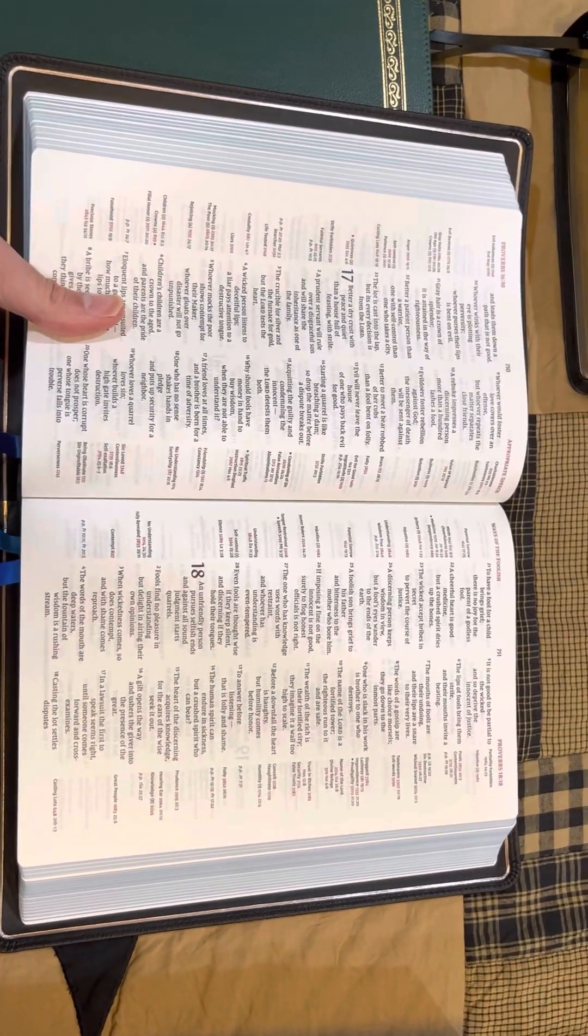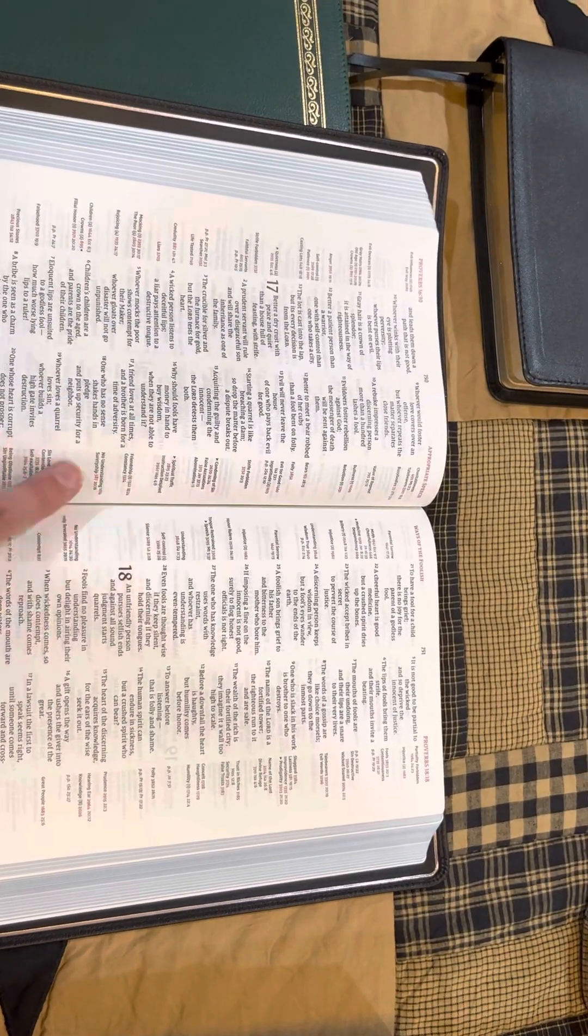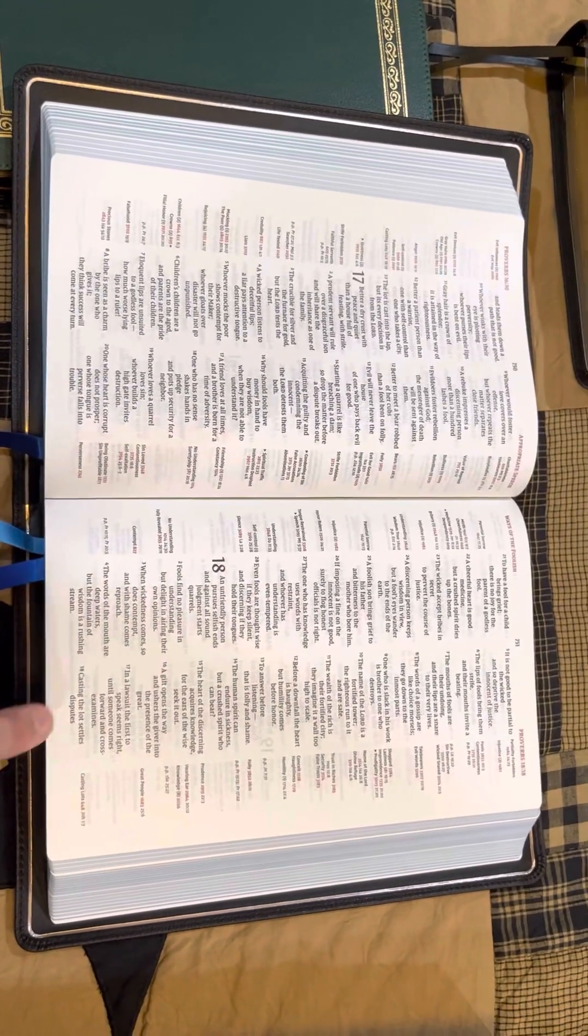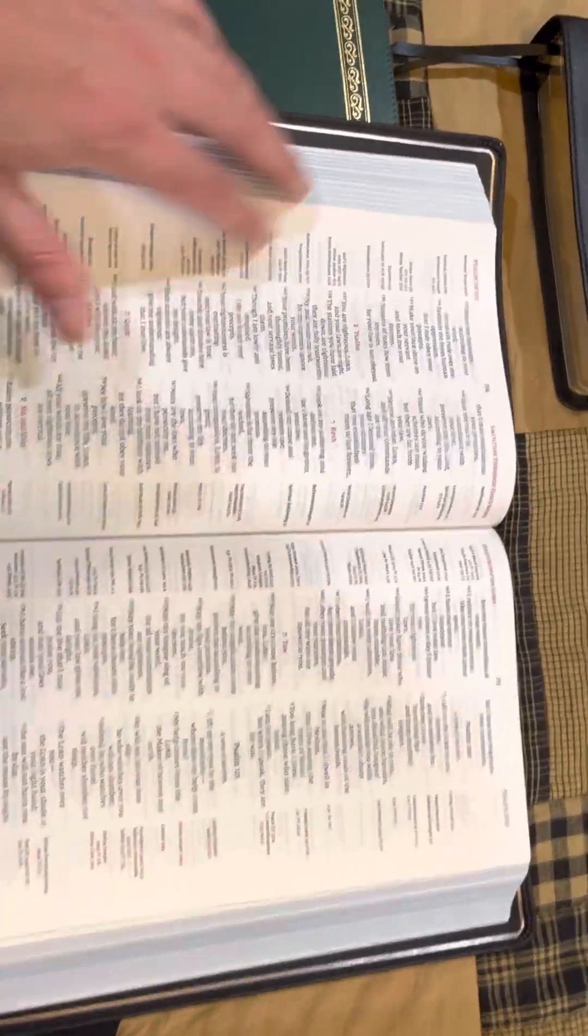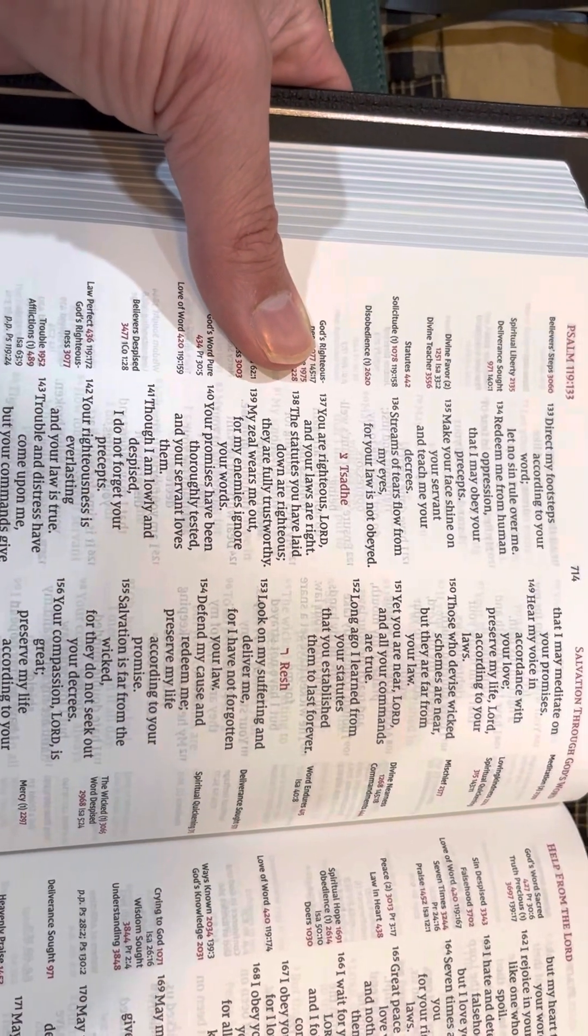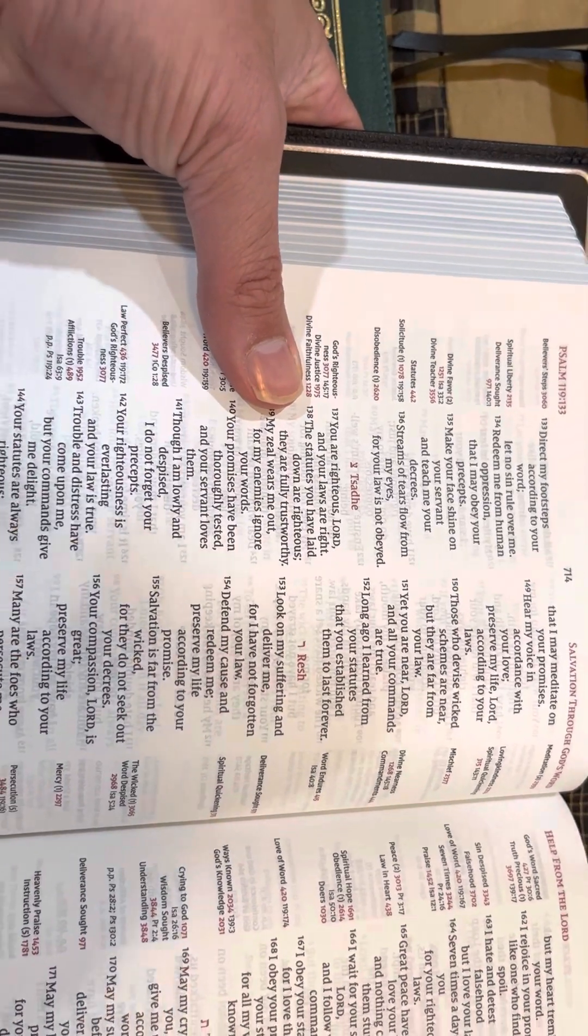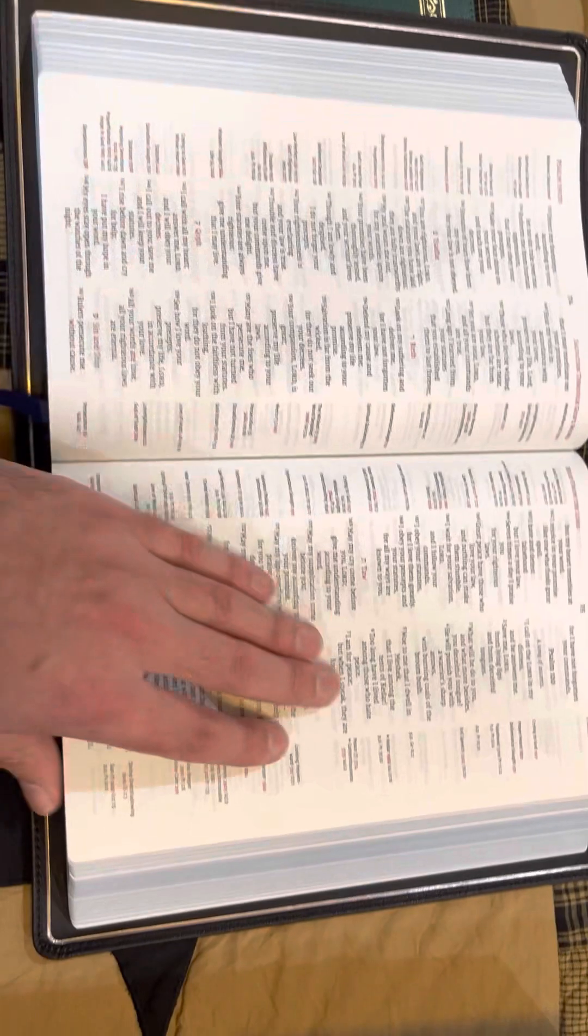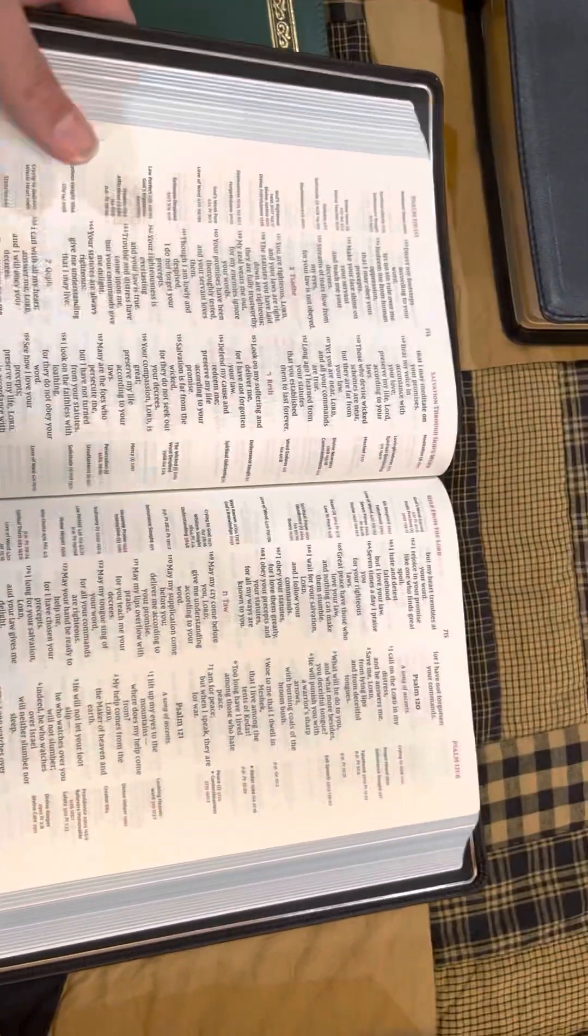In Proverbs, you can see how the Thompson chain references are to the side. There's nothing in the middle getting in the way or too much overstuffed on the bottom or anything. You're righteous, Lord, and your laws are right. The statutes you have laid down are righteous. They're fully trustworthy. Just a really nice paper, 36 GSM.